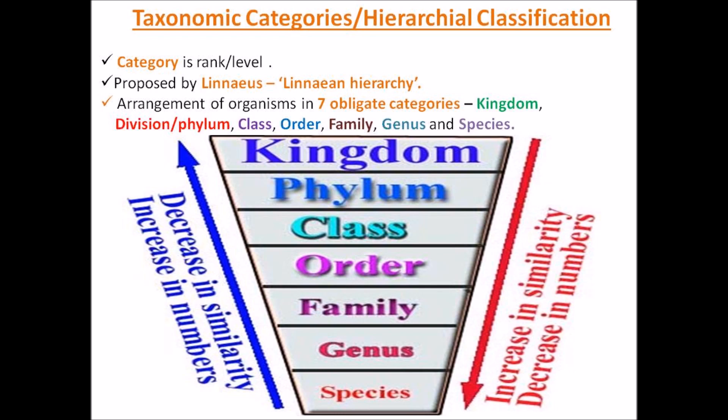In the next part we are going to study the definitions of all these seven categories with examples, as they are in your NCERT book. Bad questions can also be in the form of differences. To learn these seven category names in sequence, please write down one sentence that gives the first initials of each category.